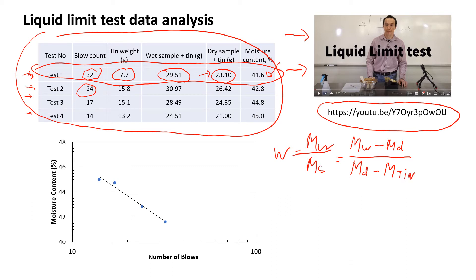Now let's look at test one and see what we have. Mass of wet soil was 29.51. Mass of dry soil together with the tin was 23.1. So this is mass of water.